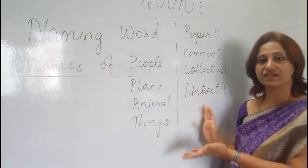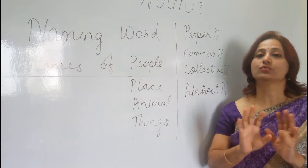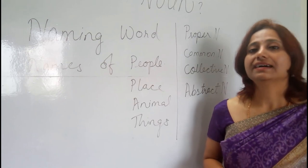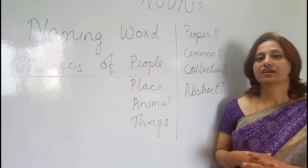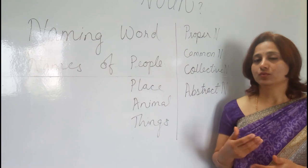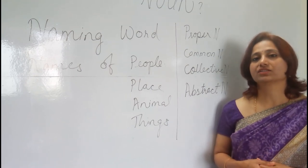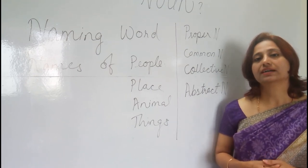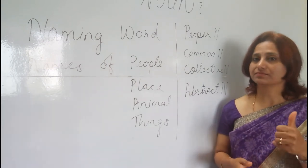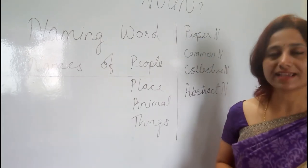Concrete nouns are specific — you can feel or touch them. Abstract nouns, on the other hand, are vague — you cannot touch or feel them. I will continue this topic in my next video. Thank you for watching. If you like the video, please subscribe and press the bell icon.